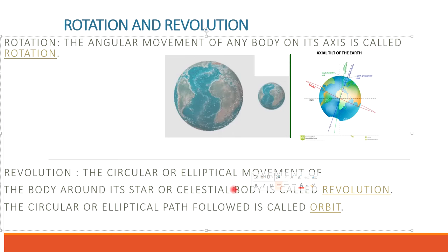If one body is considered as center and another body moves around it, that is called revolution. And the path on which it moves is called orbit.